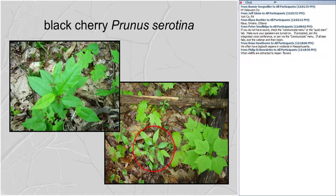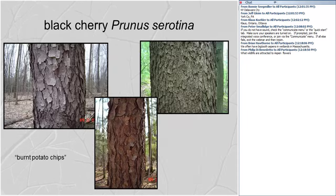Black cherry will germinate in fairly low light levels but needs almost full sunlight to survive. In New York it's one of our most valuable species, with a very wide geographic distribution from Canada down into Mexico. The bark is often described as having a burnt potato chip appearance — imagine roasting potato chips in an oven, burning them, and attaching them to the bark of a tree. If you zoom in you would also see lenticels, visible even on a mature tree.